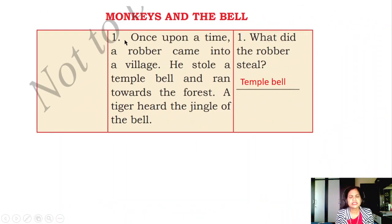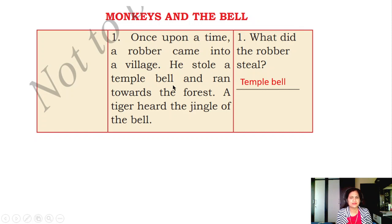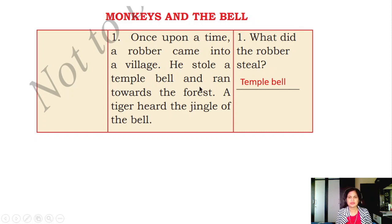Once upon a time, a robber came into a village. A robber is one who steals things from others. He stole a temple bell and ran towards the forest. A tiger heard the jingle of the bell. In this paragraph, the robber came, stole the temple bell, ran into the forest, and the tiger heard the jingle of the bell. What did the robber steal? The robber stole the temple bell.